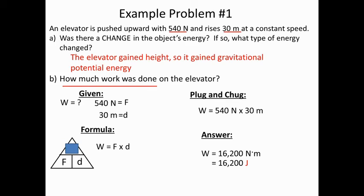This is an important fact: the amount of joules of work you do equals the amount of energy gained. If you plugged this into the potential energy equation, you'd see that the object gained 16,200 joules of gravitational potential energy — because that same amount of work was done to it to give it that energy.